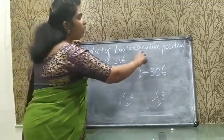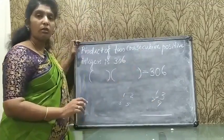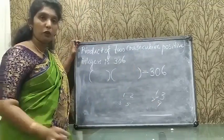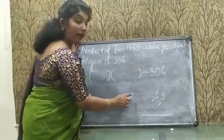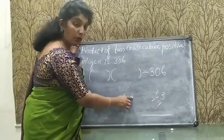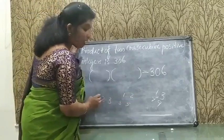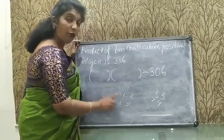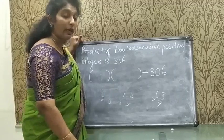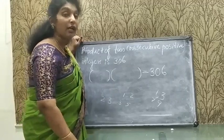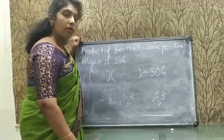Here they are talking about positive integers: 1, 2, 3, 4, 5, 6, etc. Consecutive means 1 and 2, or 2 and 3, or 3 and 4, or 99 and 100. In general, if one number is x, the next consecutive number is x + 1.